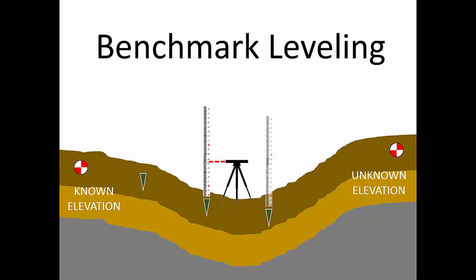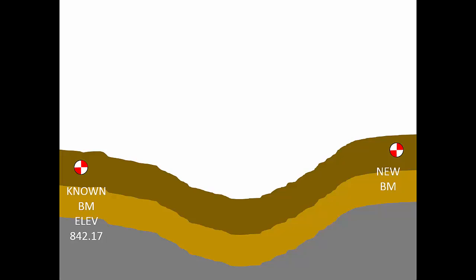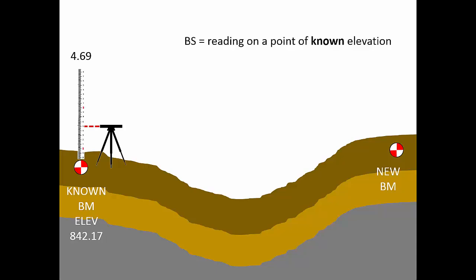Because of the terrain and the distance involved, we'll have to set up the instrument multiple times to measure a series of elevation differences. First, we'll set up our instrument where we can see the rod sitting atop the known benchmark. Our first rod reading is 4.69 feet. Since this reading is taken on a point of known elevation, we call it a back sight, commonly abbreviated as BS. With this back sight reading and the known elevation of the benchmark — 842.17 feet — the instrument height of instrument, or HI, is 842.17 feet plus 4.69 feet, which equals 848.86 feet.